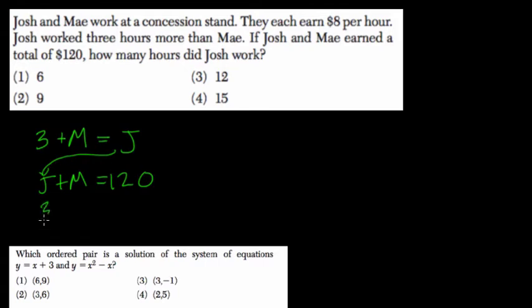So instead of J plus M, 3 plus M plus M equals 120. So now you have one variable, 3 plus 2M equals 120, and we're almost done.